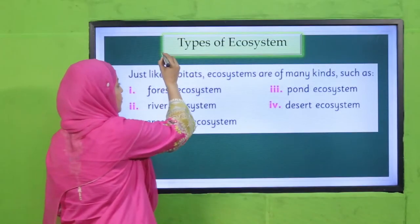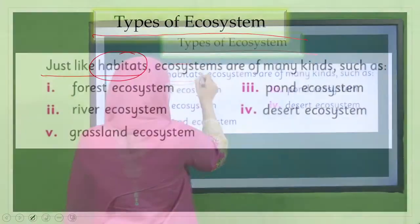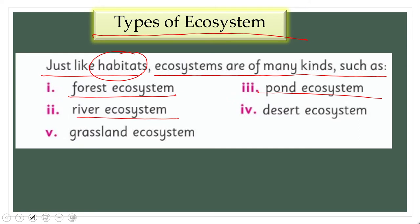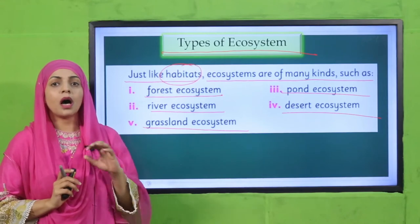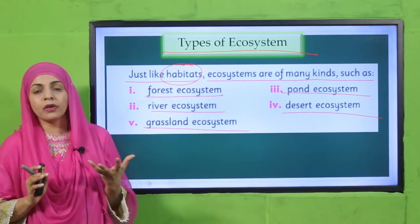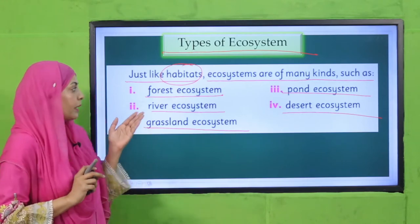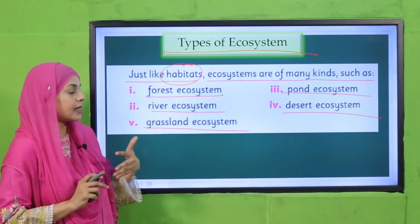Just like habitats, ecosystems are of many kinds: forest ecosystem, pond ecosystem, river ecosystem, desert ecosystem, and grassland ecosystem. Similarly, there are many types of habitats — desert, underwater, polar regions, and more. Correspondingly, there are many kinds of ecosystems: forest, river, pond, desert, and grassland.